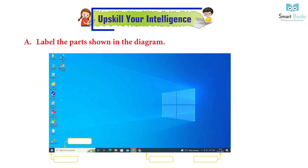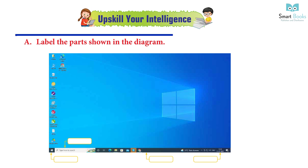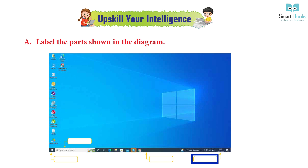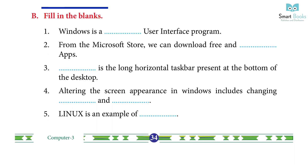Upskill Your Intelligence. A. Label the parts shown in the diagram: 1. Start Button, 2. Cortana (run and search), 3. Opened or pinned programs, 4. Date and time.